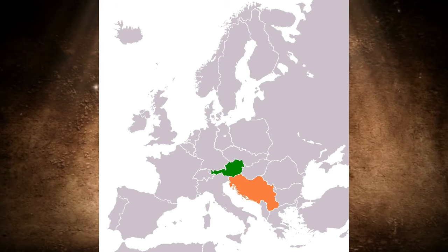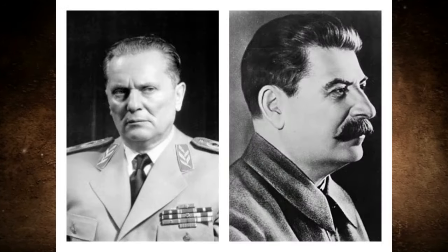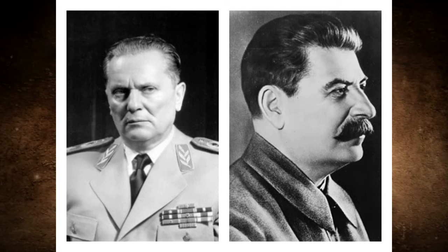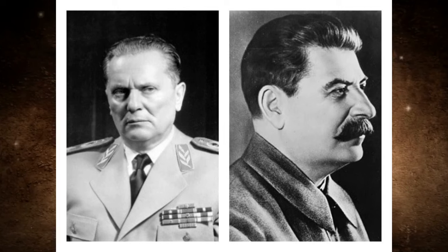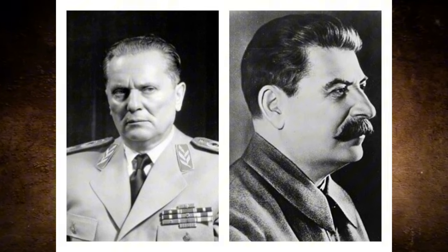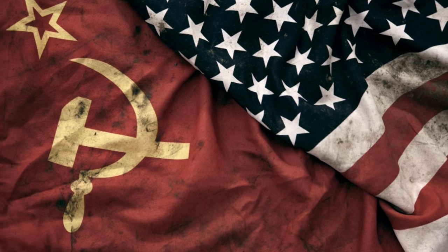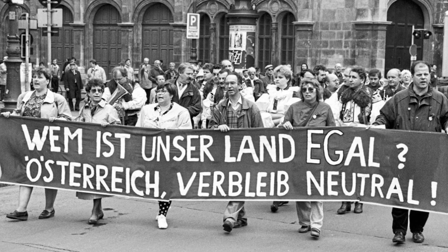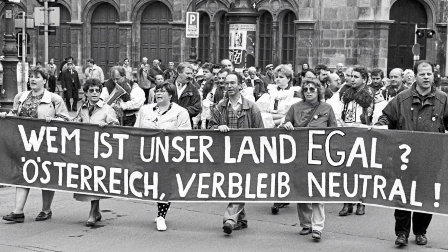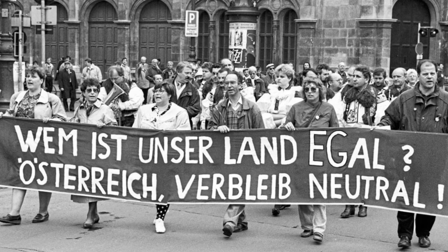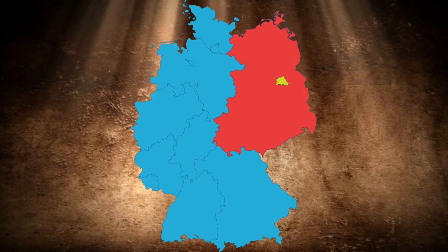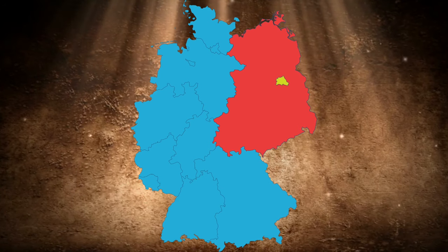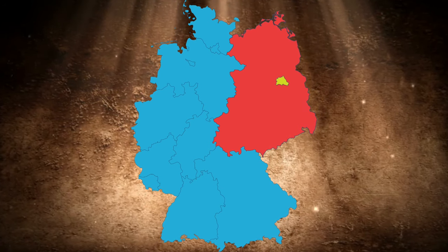The Soviet Union in particular was opposed. It supported the territorial claims that Yugoslavia made against Austria. It was only when Tito and Stalin broke up in 1948 that the Soviet Union also recognized the border as it had existed until the Anschluss to the German Reich in 1938. A short time later, however, there was a further interruption in negotiations as the Cold War became ever more present and the power blocs became increasingly hostile towards each other. It was not until 1954 that a breakthrough was achieved, when Austria offered to remain free of political alliances and to defend its neutrality. As the division between East and West could already be seen in Germany, this seemed to be a suitable solution for all sides.